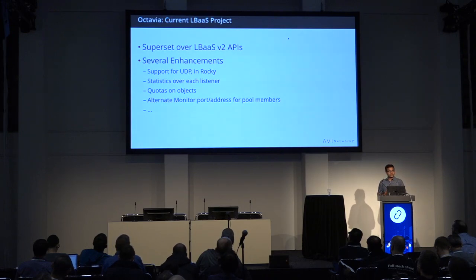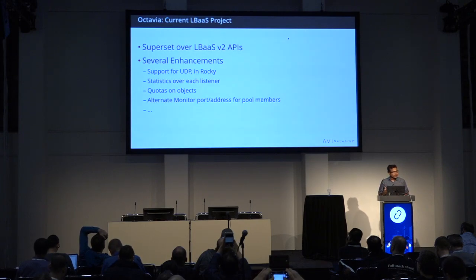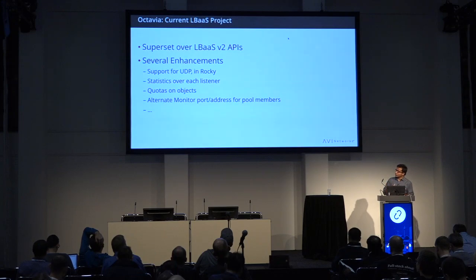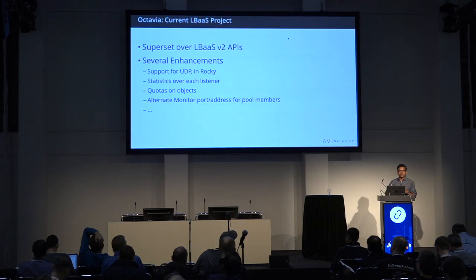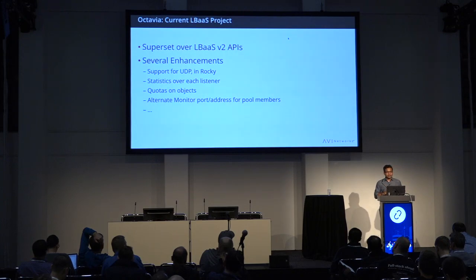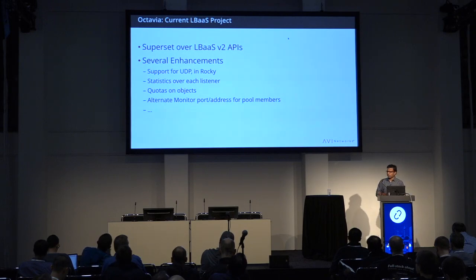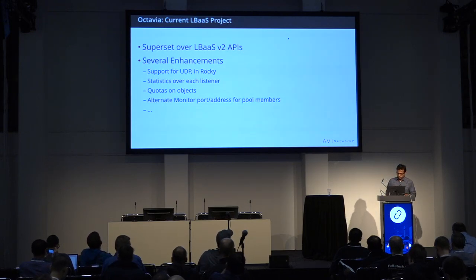Octavia is the current project and, as mentioned, it's a superset over LBaaS APIs. The community has been working hard on enhancements — UDP support has been added, and even though the reference implementation doesn't provide it, providers that support UDP-based load balancing can be driven through the APIs. There are also statistics on listeners, quotas on objects, alternate monitor ports for pool members, and more. Currently there is no GSLB support in OpenStack — there was a project called Atlas that was floated a couple of years ago, but it got abandoned.